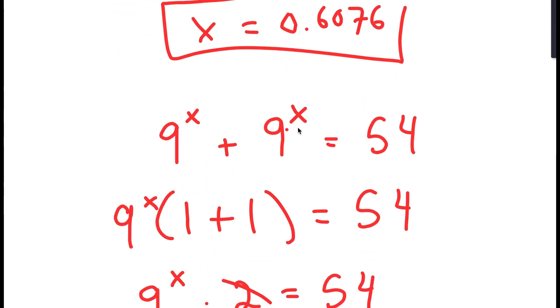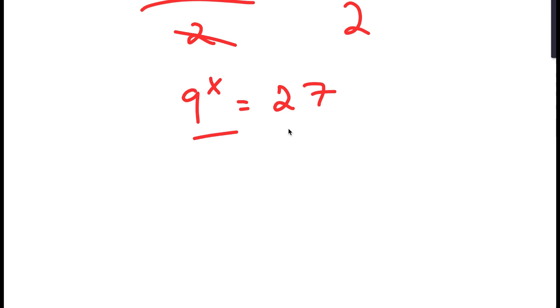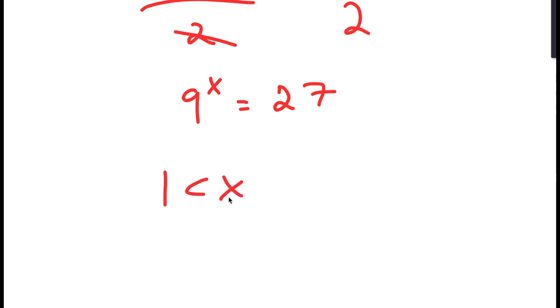So I've just taken this significantly large equation and made it much more simplified. All I have is 9 to the power of x is equal to 27. We know that x is going to be somewhere in between 1 and 2 because 9 to the power of 1 is 9 and 9 to the power of 2 is 81.